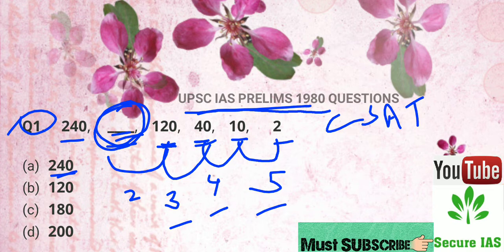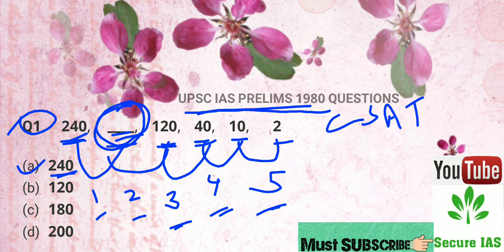And when we multiply 240 by 1, then we will get 240. So it is the sequence of 1, 2, 3, 4, 5. So A is the right answer.